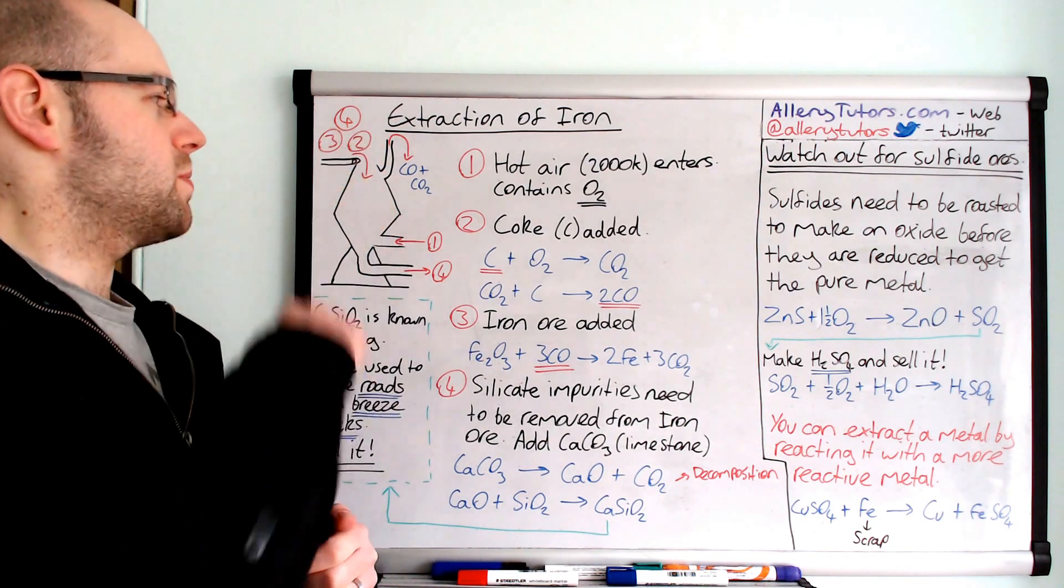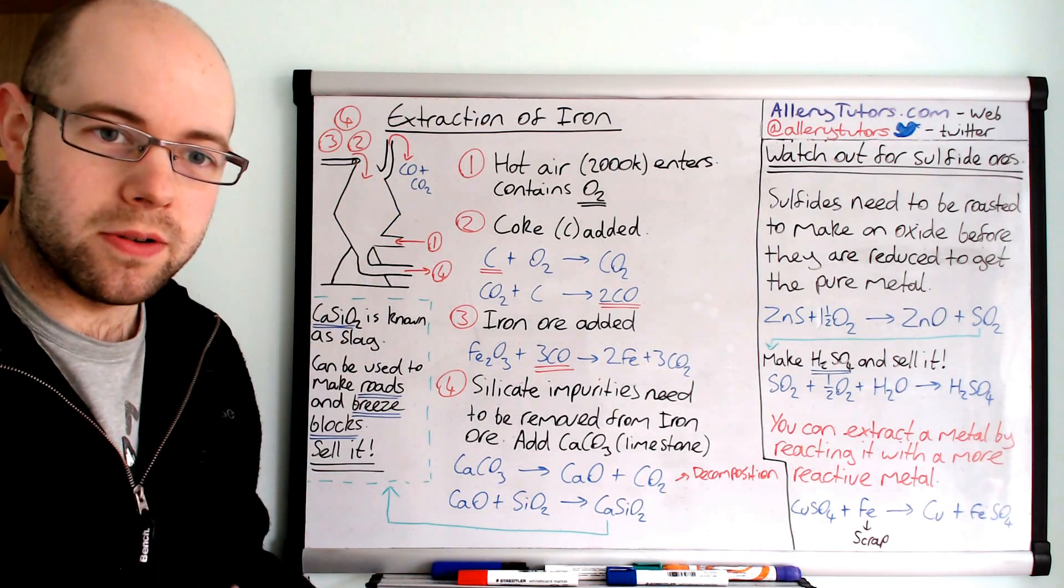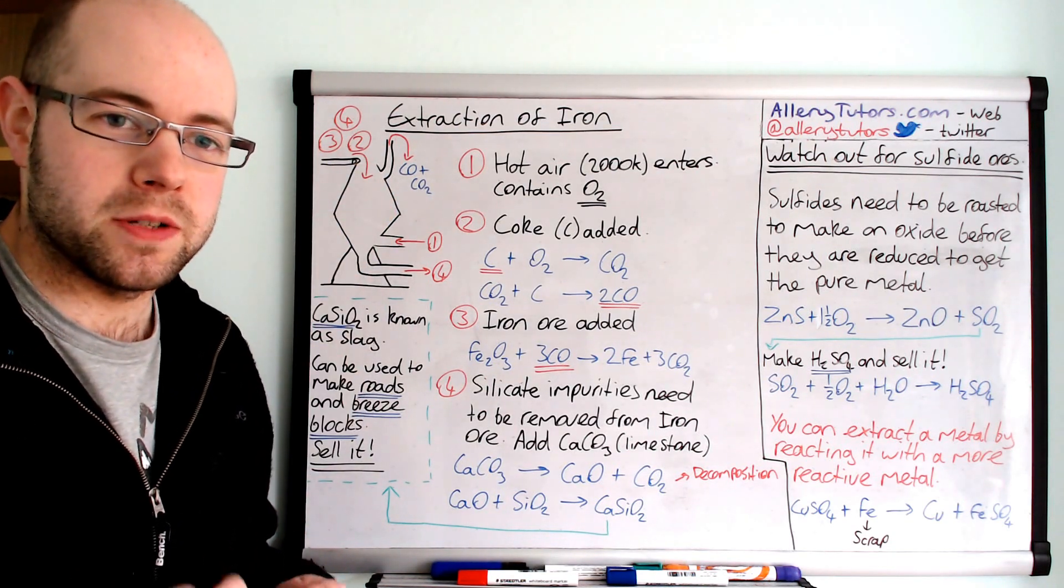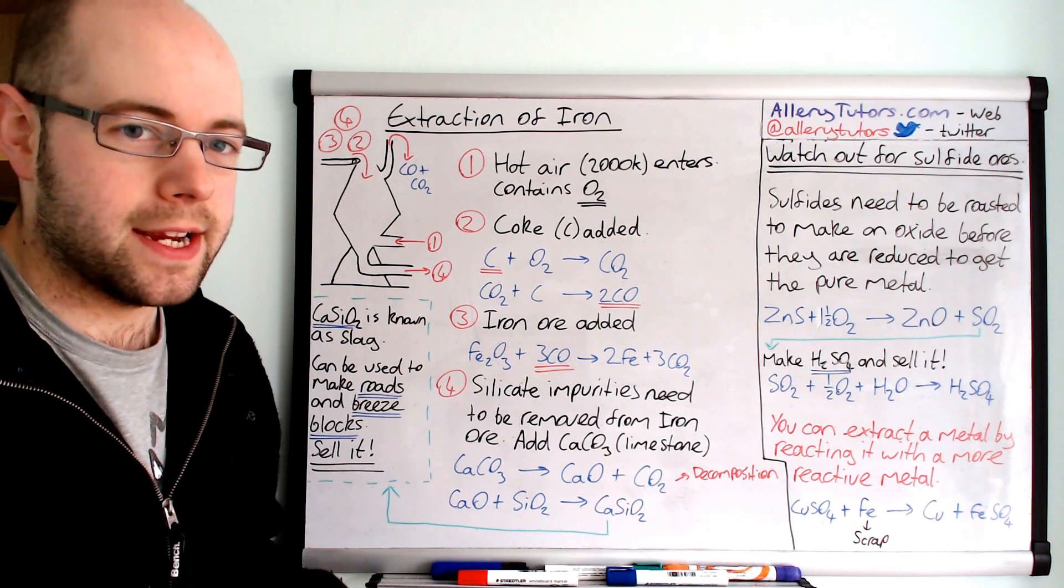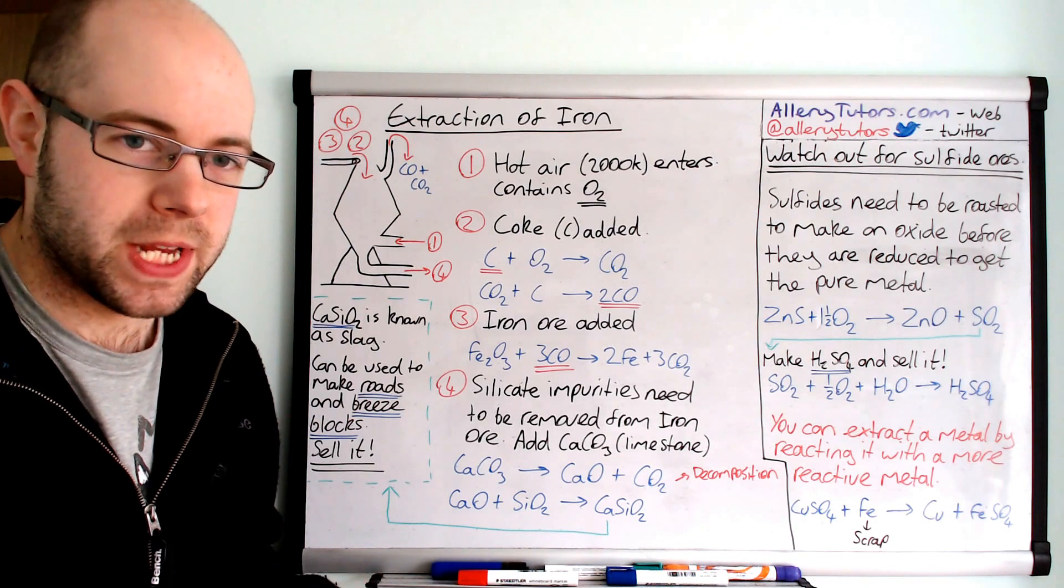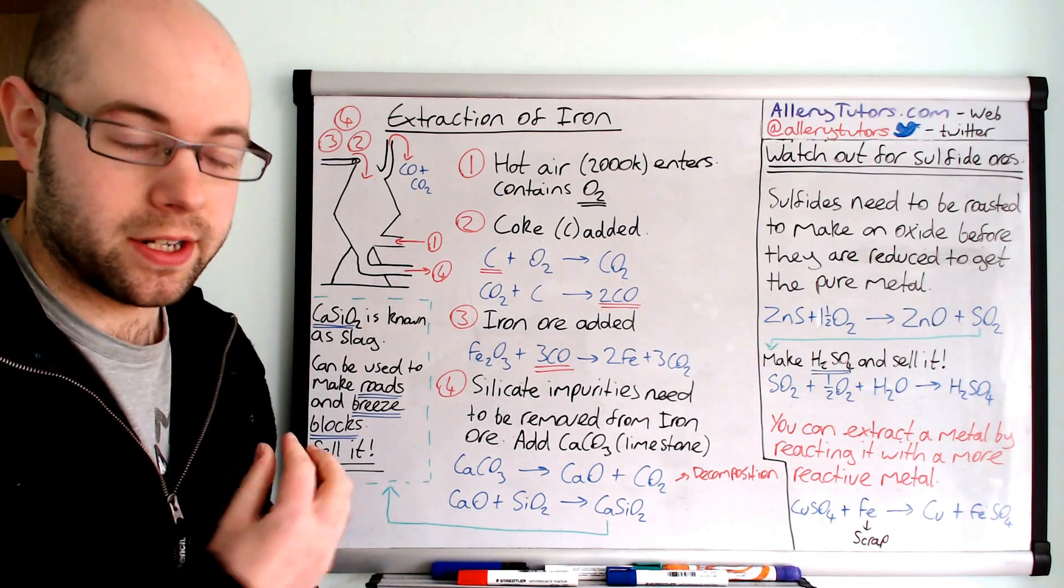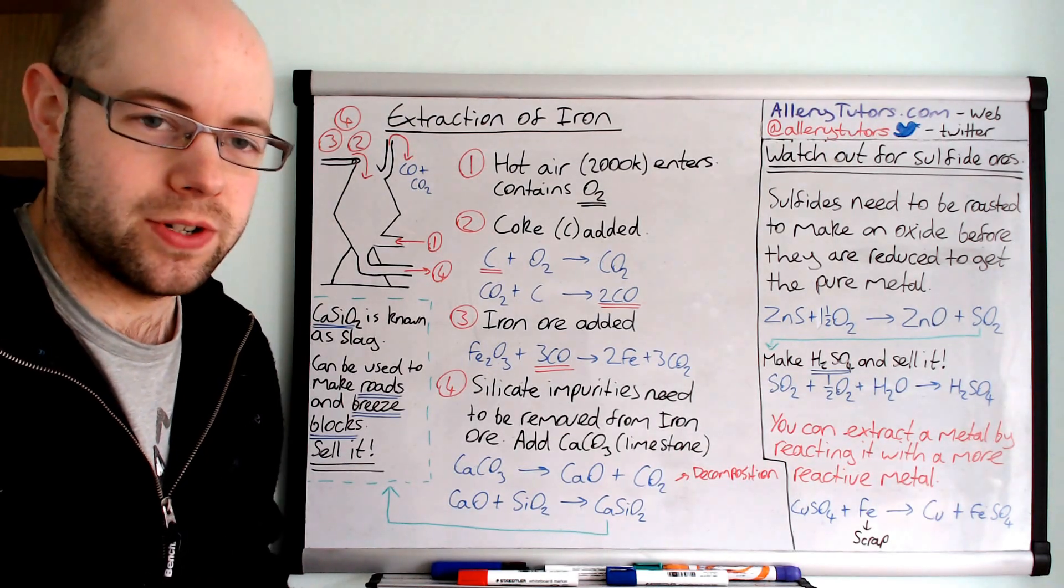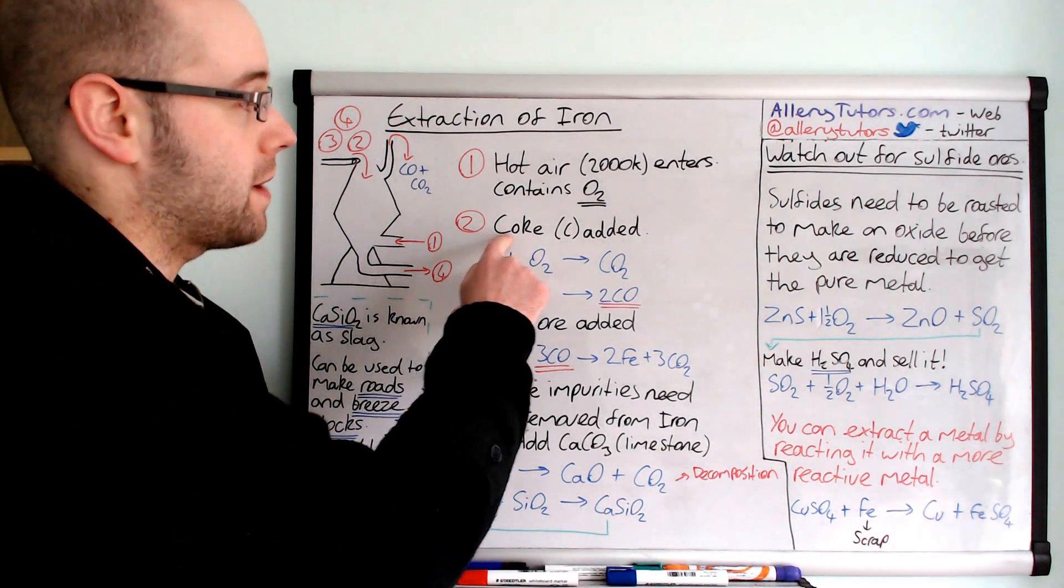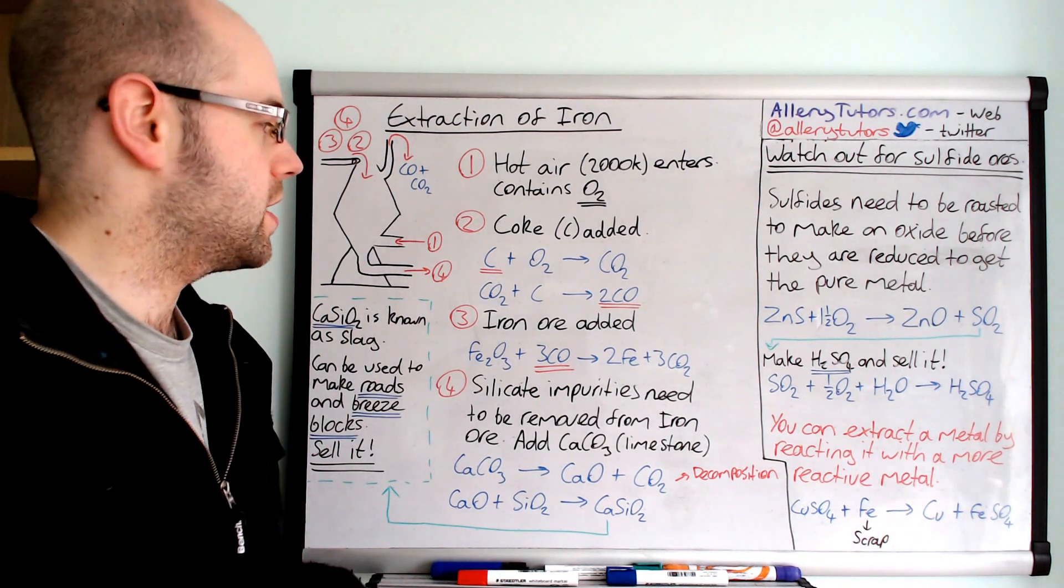Now the second step is we've got a top of the furnace and it drops in coke. Now coke is just carbon, it's pure carbon and carbon is a reducing agent. What it's going to do is effectively remove the oxygen from the iron and produce pure iron. I'll show you that in a minute and show you why it's a reducing agent. But effectively what happens is the coke is added at the top and this coke reacts with the oxygen that we've just entered.